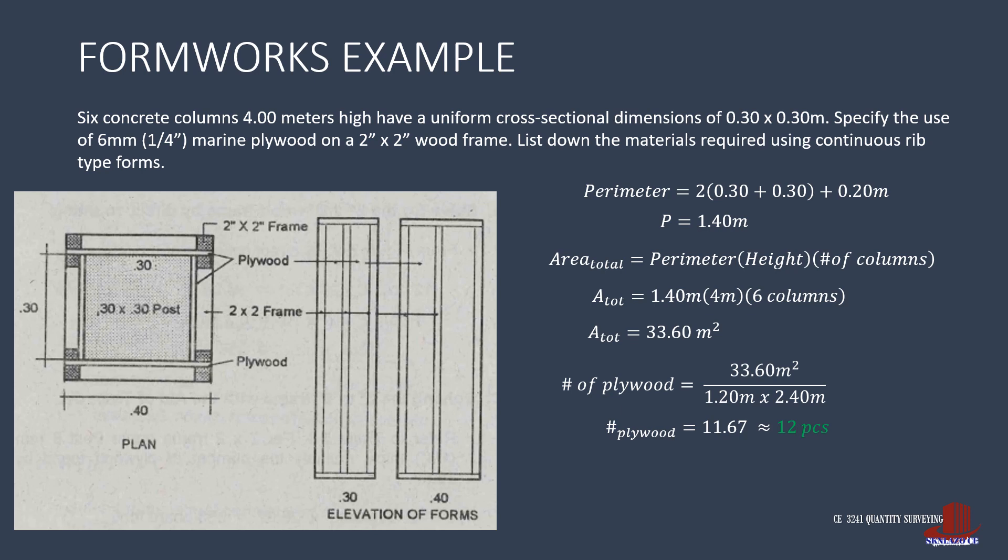The frame is then computed with the help of the table, particularly frame for 2 by 2 lumber, that is to take the plywood pieces multiplied by 29.67 board feet per piece, yielding 356.04 board feet of 2 by 2 frame.